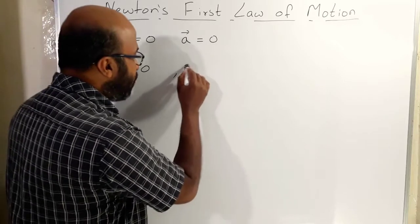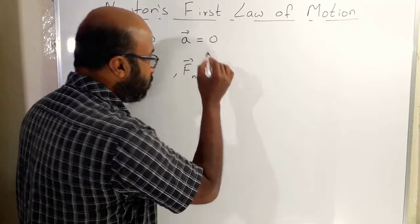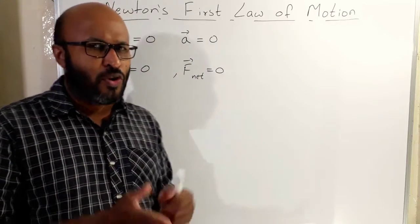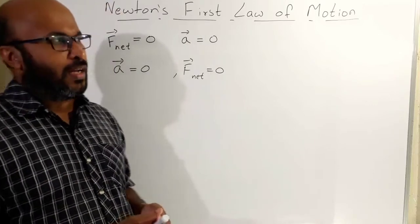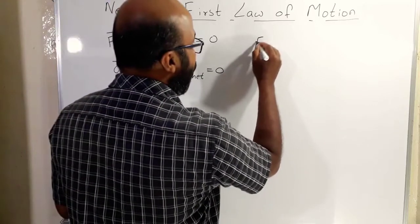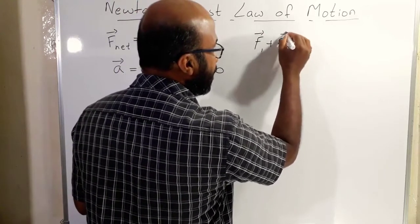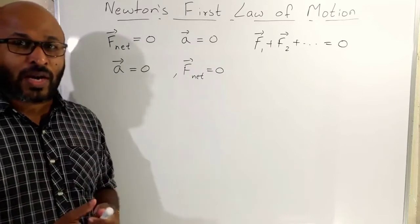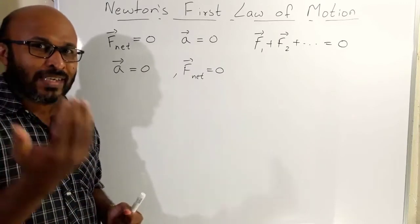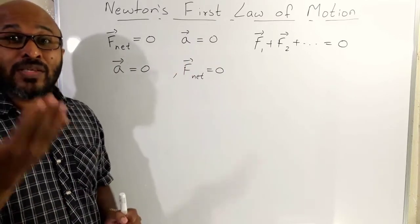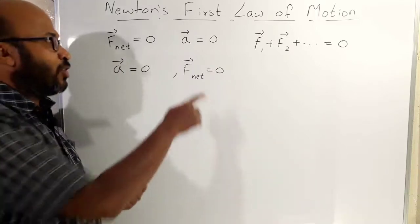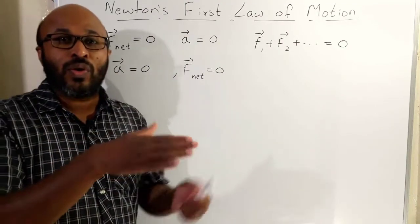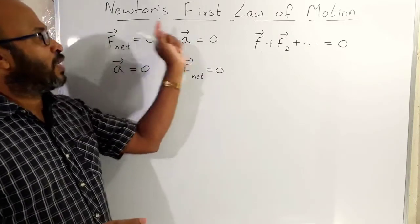That means the body's net force implies zero. The vector sum of all forces acting on it is equal to zero. If the net force is zero — that is, the vector sum of all forces is zero — then acceleration is zero. This is Newton's first law of motion.